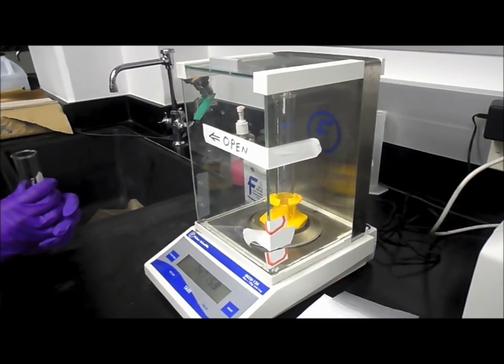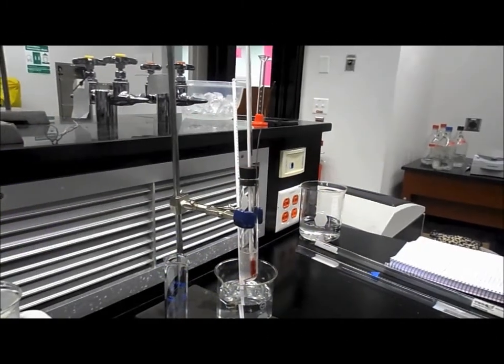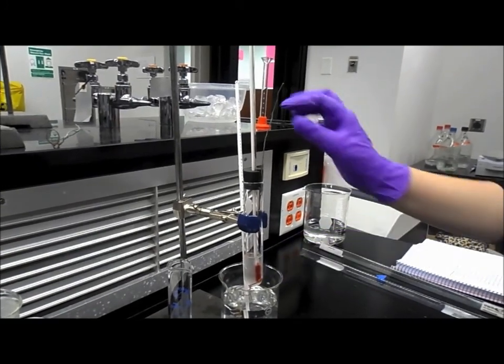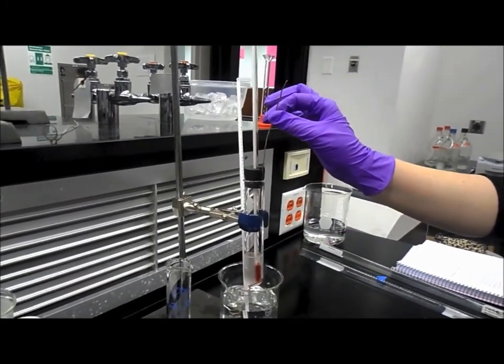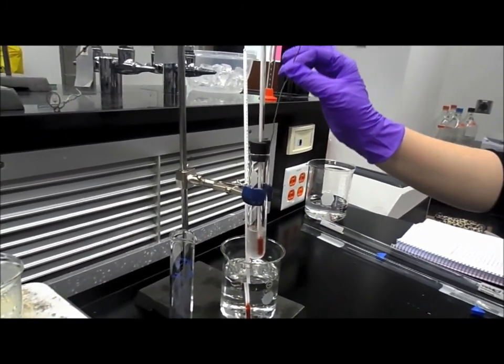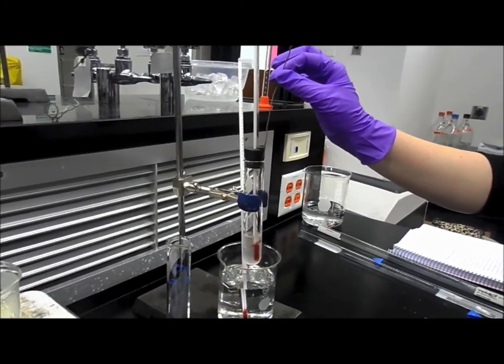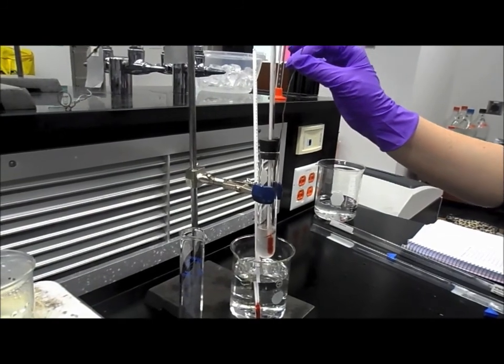When setting up the experiment, it is important to get a piece of copper wire that is long enough to reach the bottom of the test tube that you will be using. Since you want the solution to freeze uniformly, if the copper wire does not reach the bottom of the solution, the outside will freeze faster than the inside, and will give you an inaccurate freezing point.